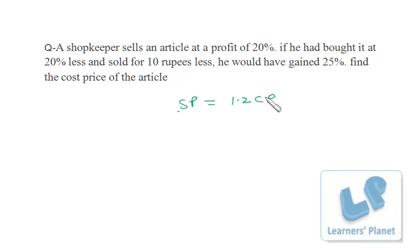I assume that this is basic selling price and this is basic cost price. Now if he bought it 20% less, that means the new CP is 80% of the previous CP.